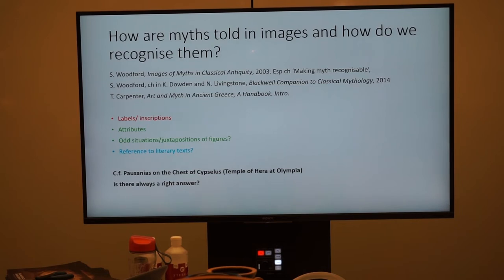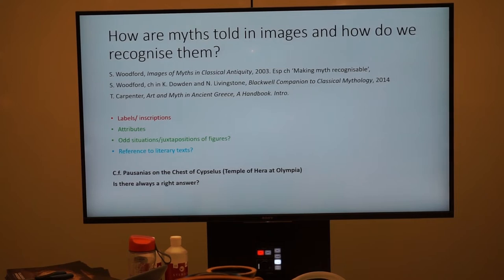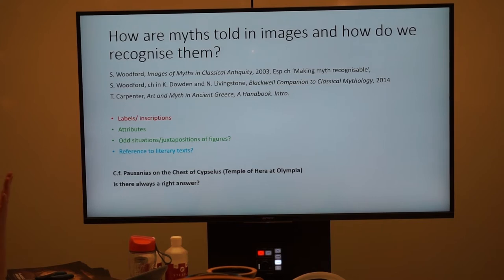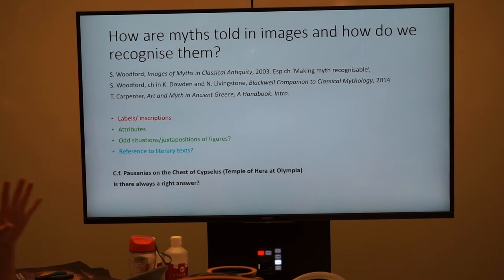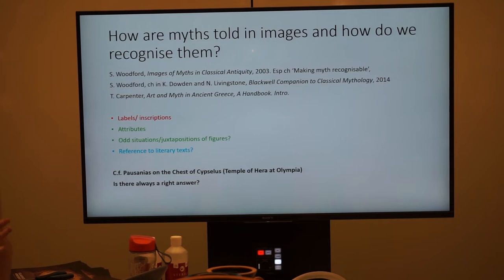There are essentially three ways we recognise something as a myth in an image. First, through labels - inscriptions added to the image. Sometimes these can be inscriptions of the scene, but more usually they just label the figures by name. We find this quite a lot on vases, and sometimes on architectural sculpture like the Siphnian Treasury, though that's more unusual. At the end of the sixth century BC you get inscriptions on the Gigantomachy and Trojan War scenes on the Siphnian Treasury, but generally not so much elsewhere in architectural sculpture until the Hellenistic period.